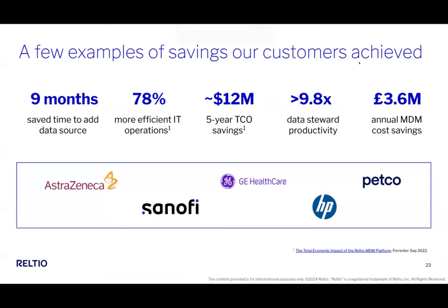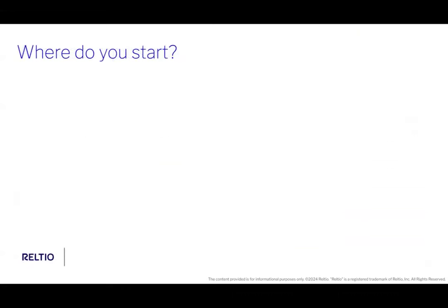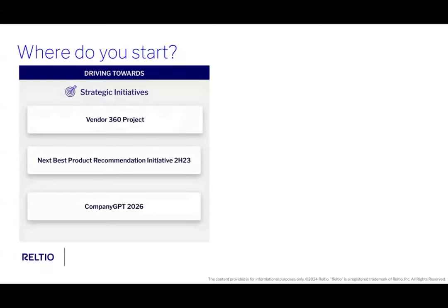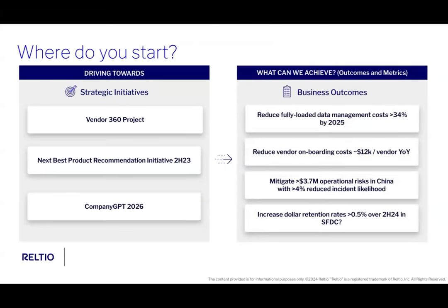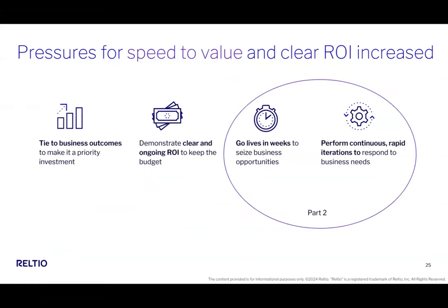Start with what your organization is trying to accomplish and how they might measure success first. Think about what initiatives are already out there — a vendor 360 project, a next best action recommendation initiative, or a company GPT bot coming out in a year or two. Think about what outcomes in which regions and how you might measure success before getting to which domains, which data sources, how to tune, and which people and process changes. For that piece, I'll hand it off to Karthik, who will cover how we accelerate project implementation to drive faster time to value.